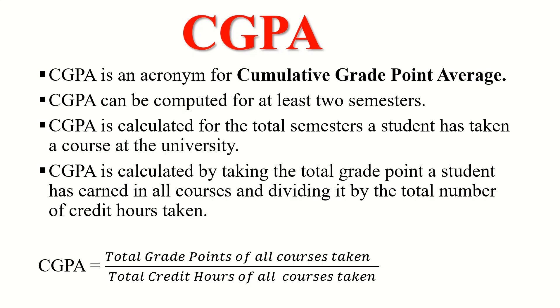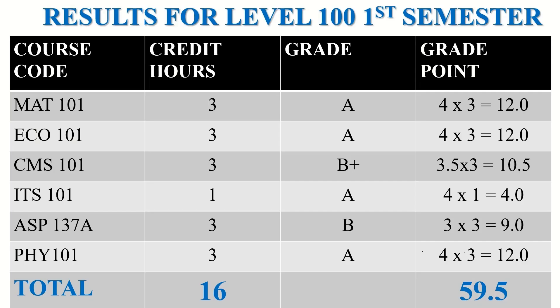Now let's move to the practical work. Let's assume this is the result for a particular student in Level 100 first semester. In Level 100 first semester, he was able to do six courses, and these six courses ended up having 16 credit hours. At the end of the semester, he accumulated a grade point of 59.5.